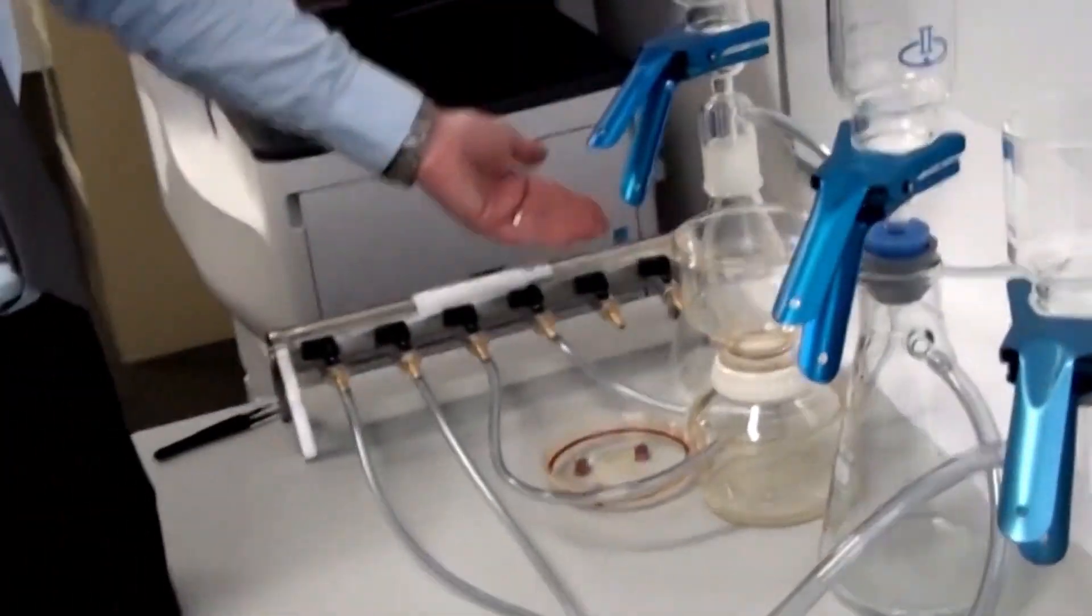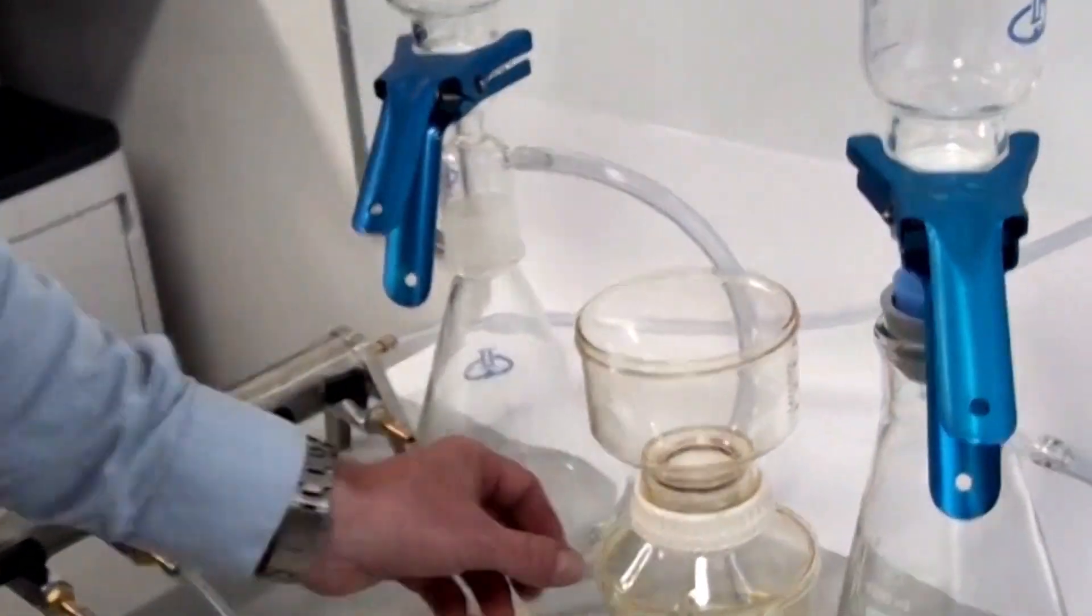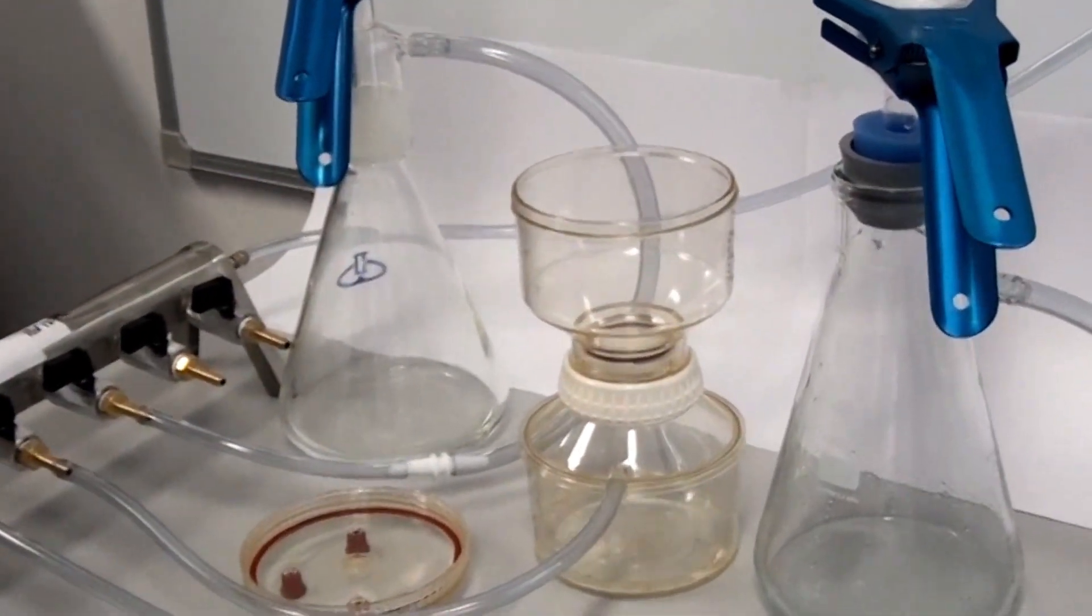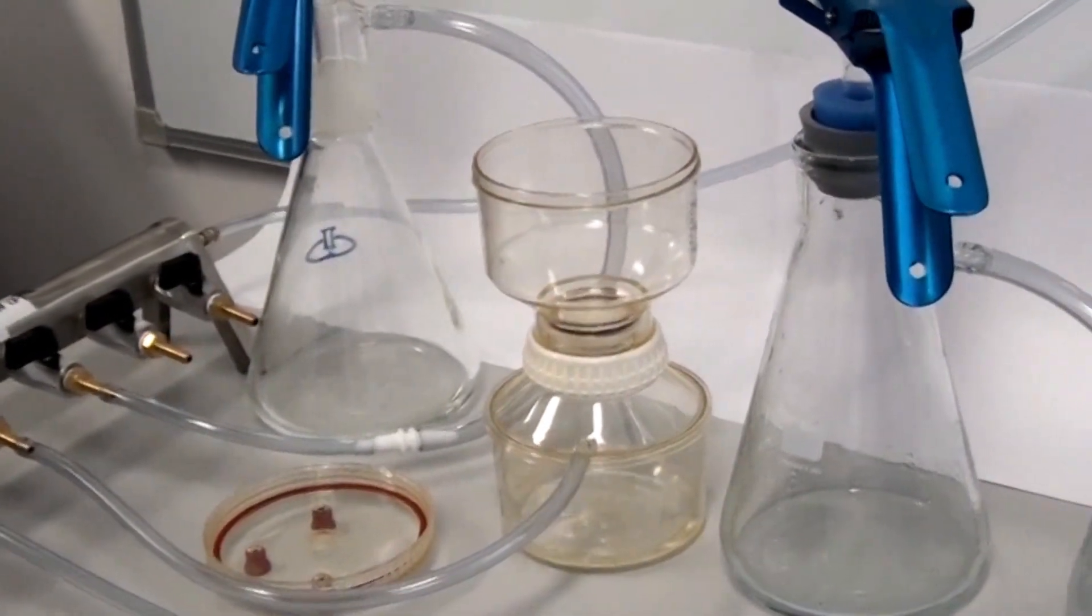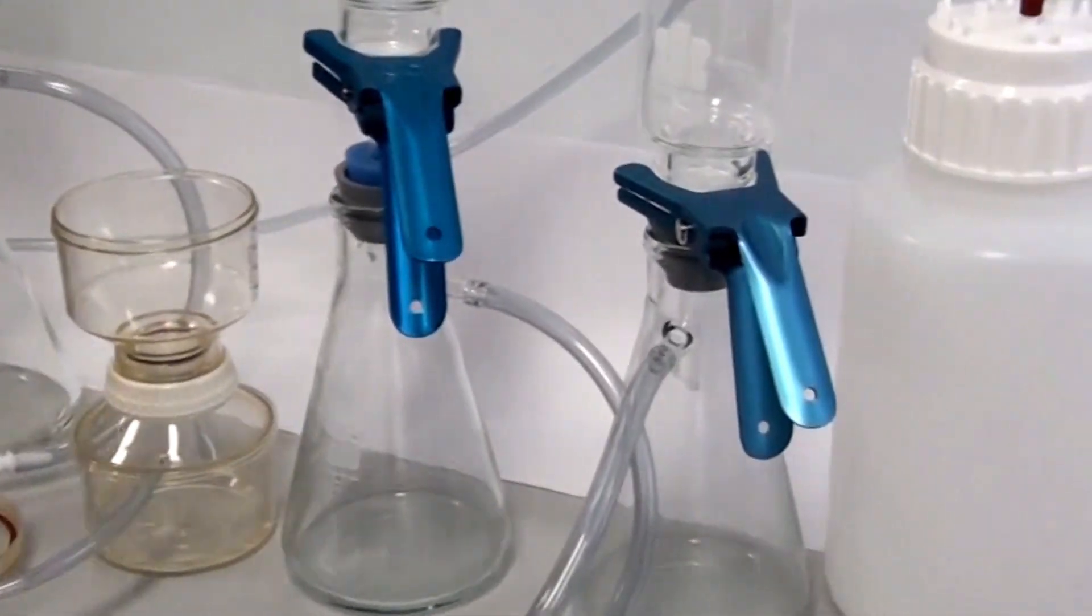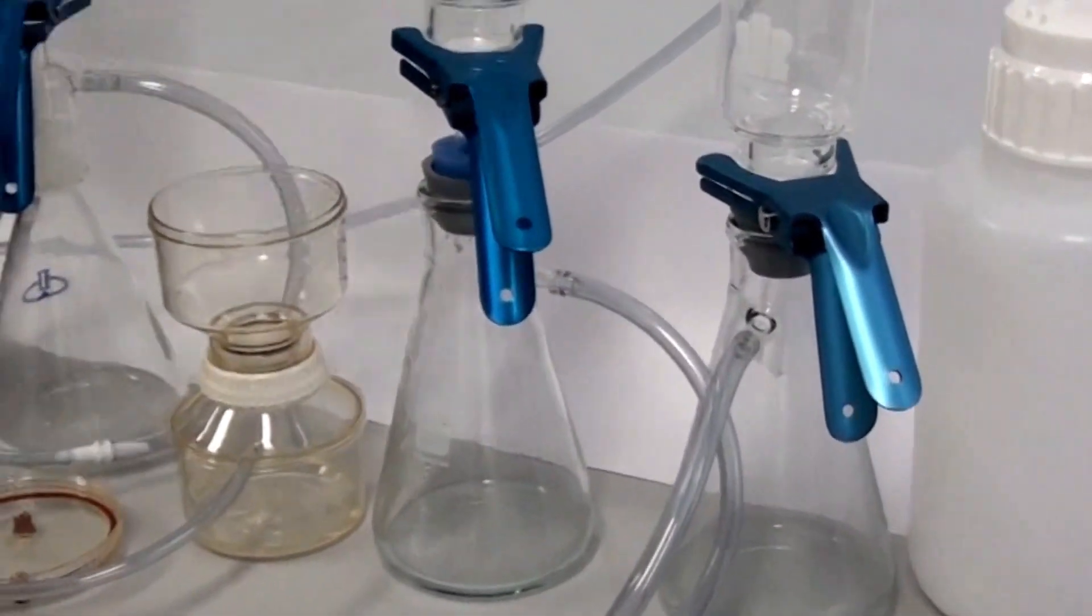So all the liquid's passed through and been collected in the flasks. The PF1202, that's autoclavable, polysulfone type plastic. Obviously these glass flasks can be autoclaved. The whole top section can be autoclaved.